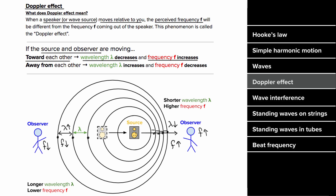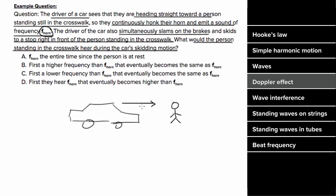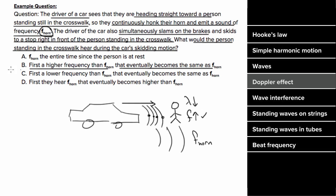What does an example problem involving the Doppler effect look like? A driver heading straight toward a person in a crosswalk continuously honks at frequency F-horn, then slams on the brakes and skids to a stop. As the car approaches, the wave crests are spaced closer together, so the person hears a smaller wavelength and higher frequency. But as the car slows down, this effect becomes less dramatic, and once the car stops, the crests return to normal spacing and the person hears just the regular horn frequency.